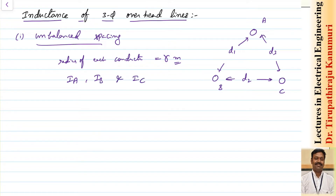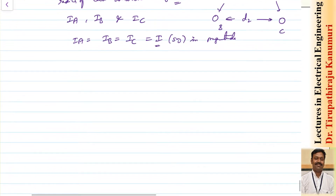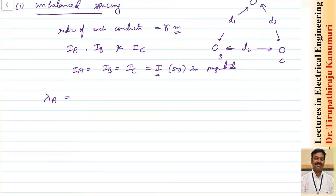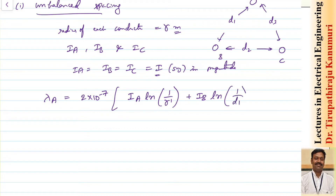The currents flowing through the respective conductors are ia, ib, and ic. For a balanced load, the magnitudes are equal — ia = ib = ic = I — but they are displaced in phase. Let us calculate the flux linkages of conductor A due to all currents: its own conductor, conductor B, and conductor C. This gives: λa = 2×10⁻⁷ [ia·ln(1/r') + ib·ln(1/d1) + ic·ln(1/d3)], in weber-turns per meter, where r' = 0.7788r includes internal flux linkages.